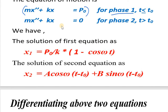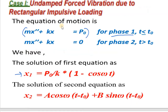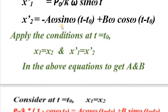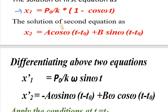For phase 2, the solution is x2 equals A cos(ω(t minus t0)) plus B sin(ω(t minus t0)), because the second phase starts after t0. Differentiating and applying boundary conditions — at t equals t0, x1 equals x2 and x1-dot equals x2-dot — we can find A and B.